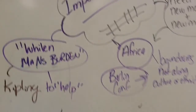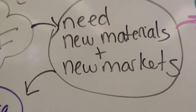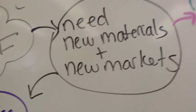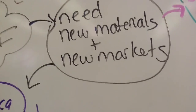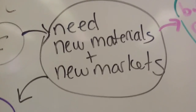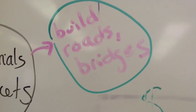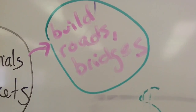Imperialism has a direct connection to the Industrial Revolution. Because of industrialization, countries needed new raw materials such as cotton and other goods, and also new markets — people to sell their products to. Once they went to these regions, in order to move their goods, they built roads, bridges, and other infrastructure in the colonies.